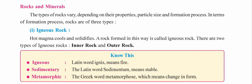Igneous rocks are made when hot magma cools and solidifies. In the earth's crust, hot magma is present due to heat and temperature. When that magma cools down — when the temperature is reduced — it solidifies and converts into a rock. A rock formed in this way is called an igneous rock. There are two types: inner rock (intrusive) and outer rock (extrusive).